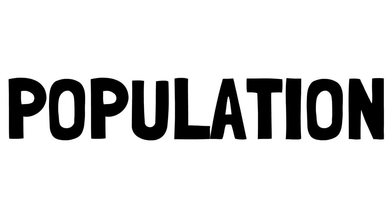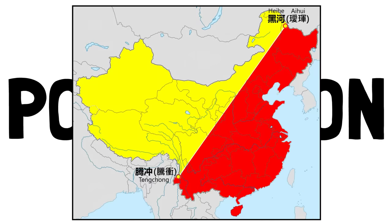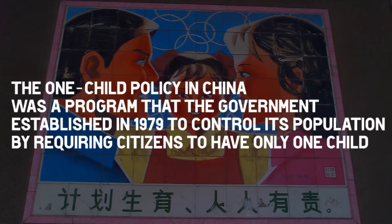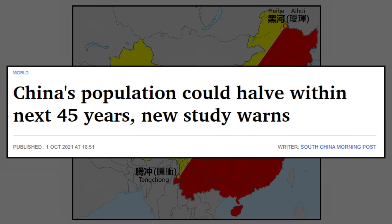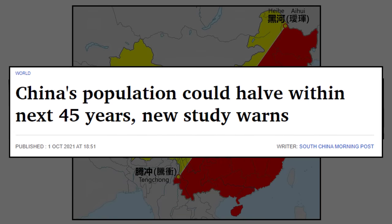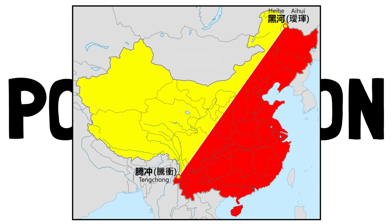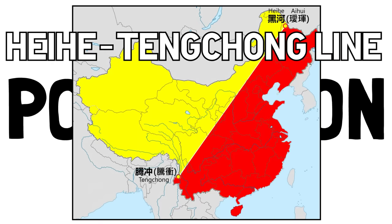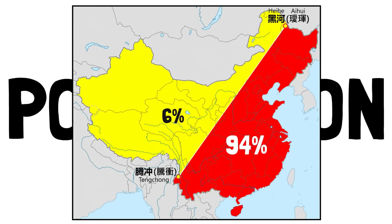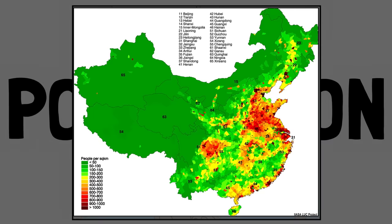Next, population. Like I said at the beginning, China has a lot of people, although their population control policies have actually now led them to a future population crisis, with some news reports pointing to the fact their population could be cut in half in the next 45 years. But today there's still a lot, and their distribution along their territory is interesting. This map is very well known — it's the Heihe-Tengchong Line, an imaginary line that divides the area of China into two roughly equal parts with contrasting population densities.